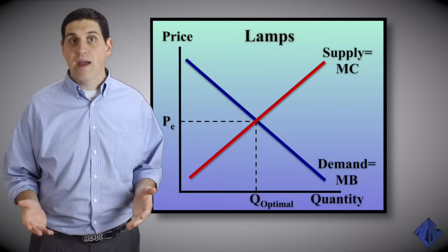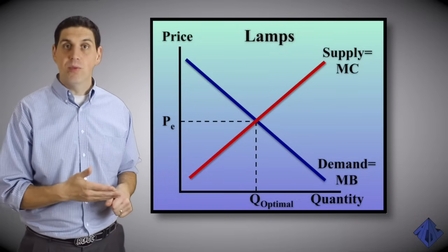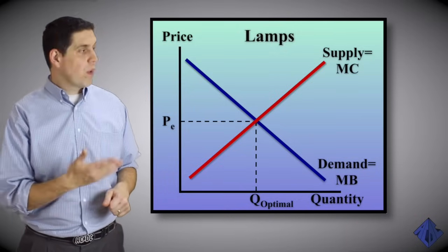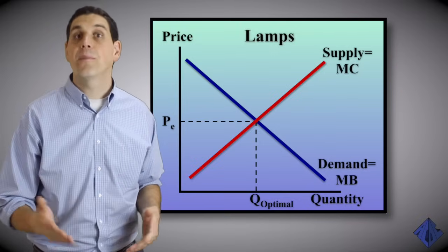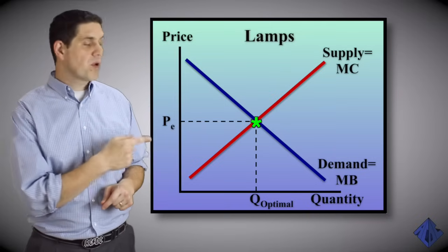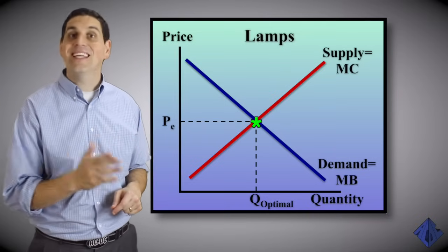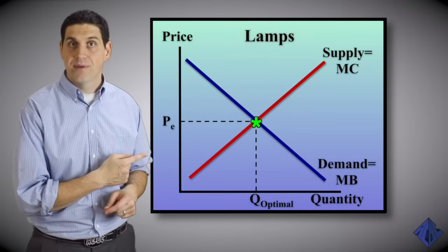For example, let's go back and look at supply and demand. The demand curve shows the marginal benefit to consumers and their willingness to pay for lamps. The supply curve represents the marginal cost of the firms that produce lamps. The free market will produce an equilibrium quantity where supply equals demand, and that's the efficient or the socially optimal quantity of lamps.